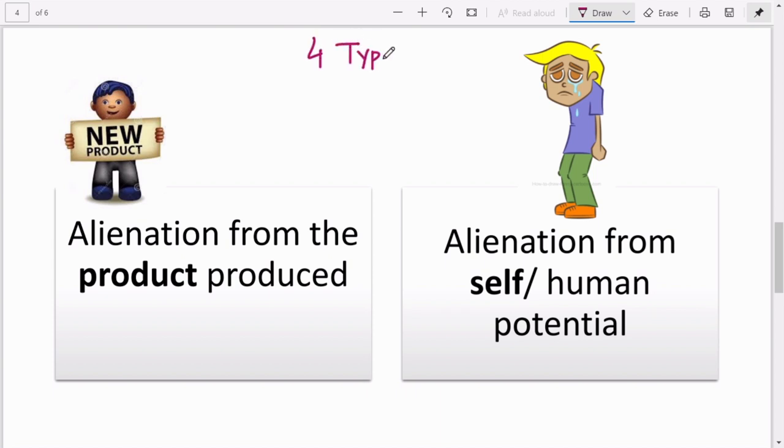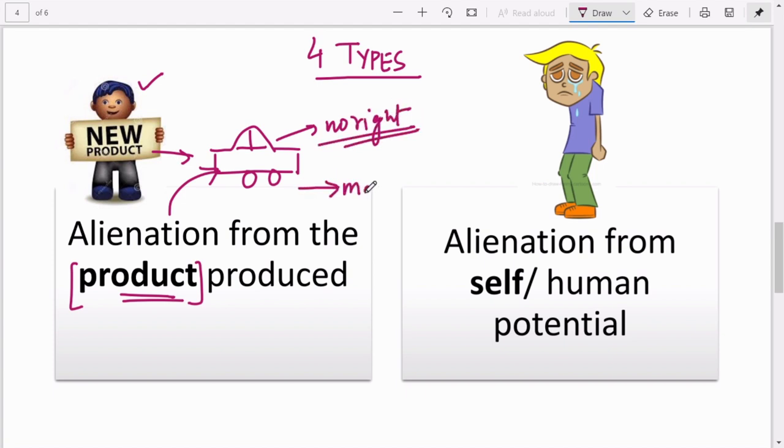Therefore Marx says there are majorly four types of alienation. Number one is alienation from the product produced. Let me give you an example - suppose you are a worker and you have made a new product, again let's take the example of a car. This car will not belong to you. The product you made, you will have no right over it. This product will go to the market and it will get sold. It does not belong to you, therefore you feel alienated from the product you yourself made.